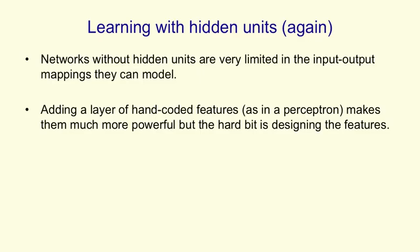Now that we know how to learn the weights of a logistic unit, we're going to return to the central issue, which is how to learn the weights of hidden units. If you have neural networks without hidden units, they're very limited in the input-output mappings they can model. If you add a layer of hand-coded features, as in a perceptron, you make the net much more powerful, but the difficult bit for a new task is designing the features. The learning won't solve the hard problem — you have to solve it by hand.